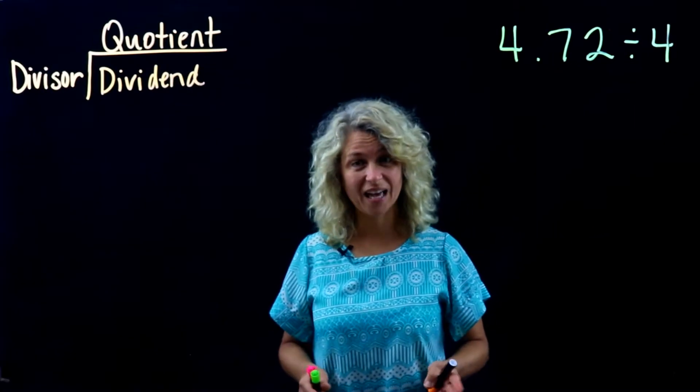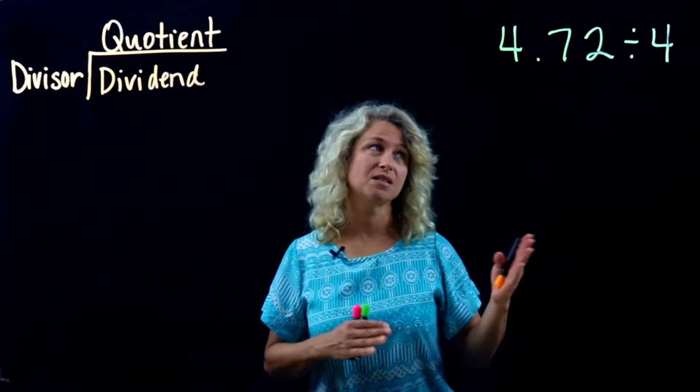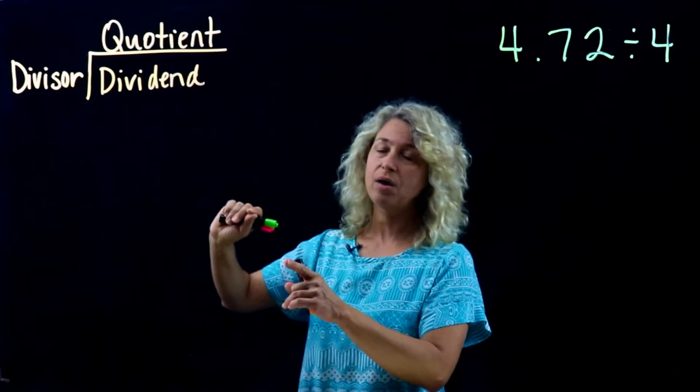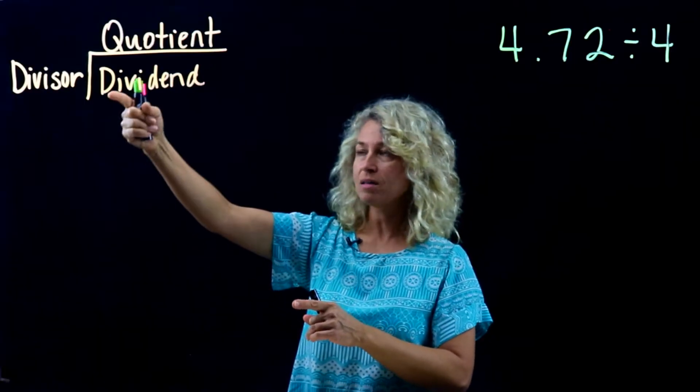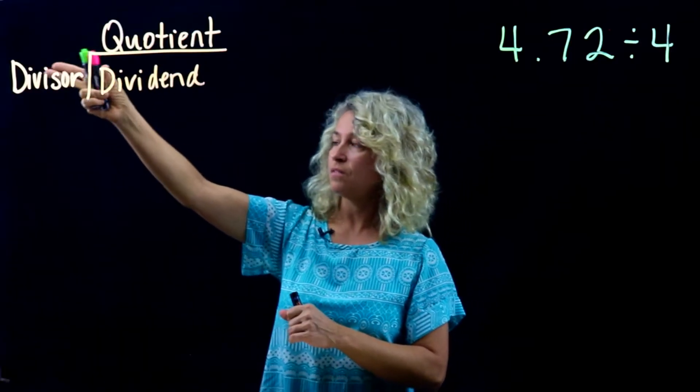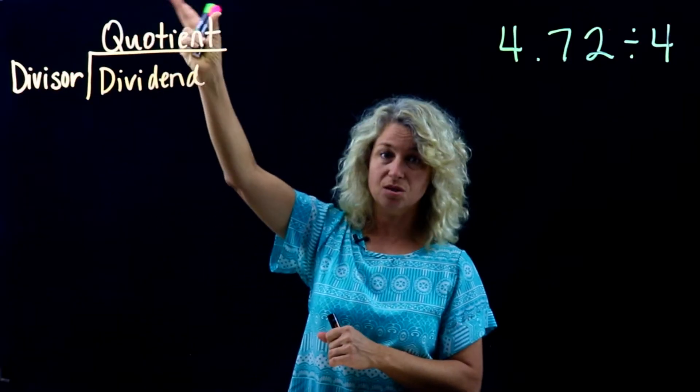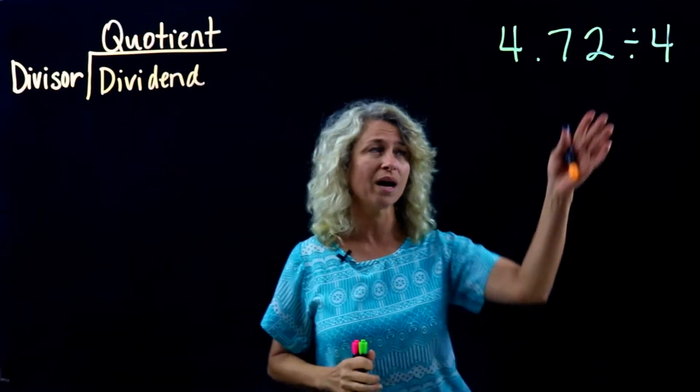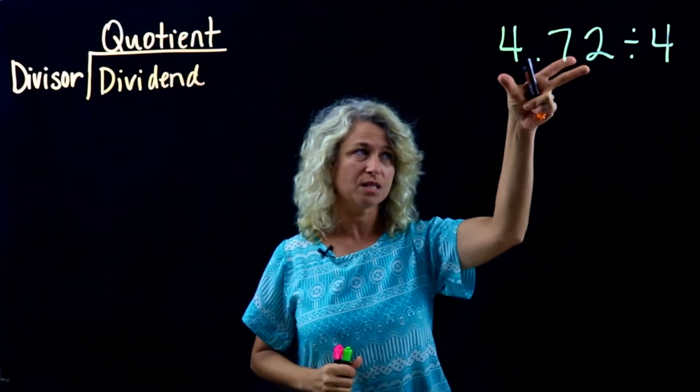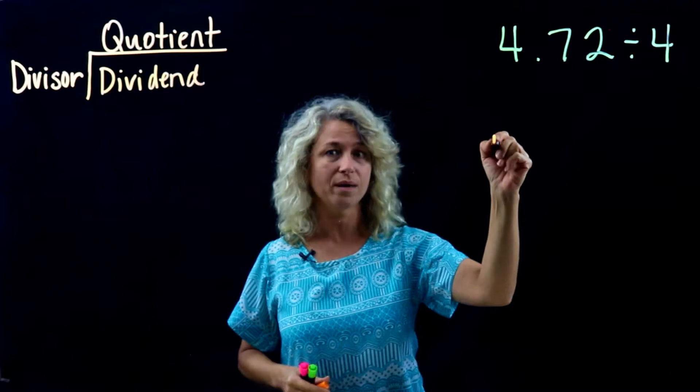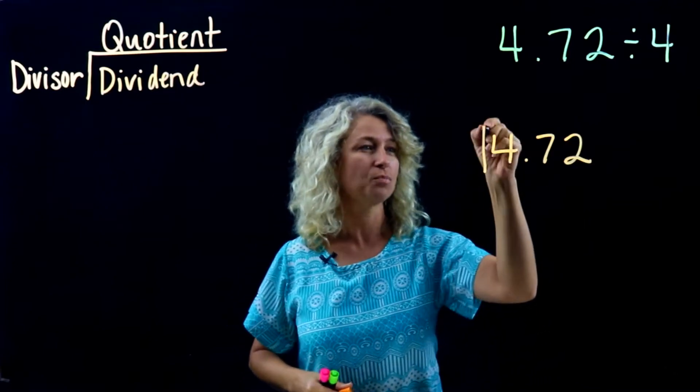Today we are going to divide with decimals. Take a look at the terminology we've got to know. The number inside the house is the dividend, the divisor is your number that you're dividing by, and your answer is the quotient. So this first number is your dividend and it always goes inside the house.